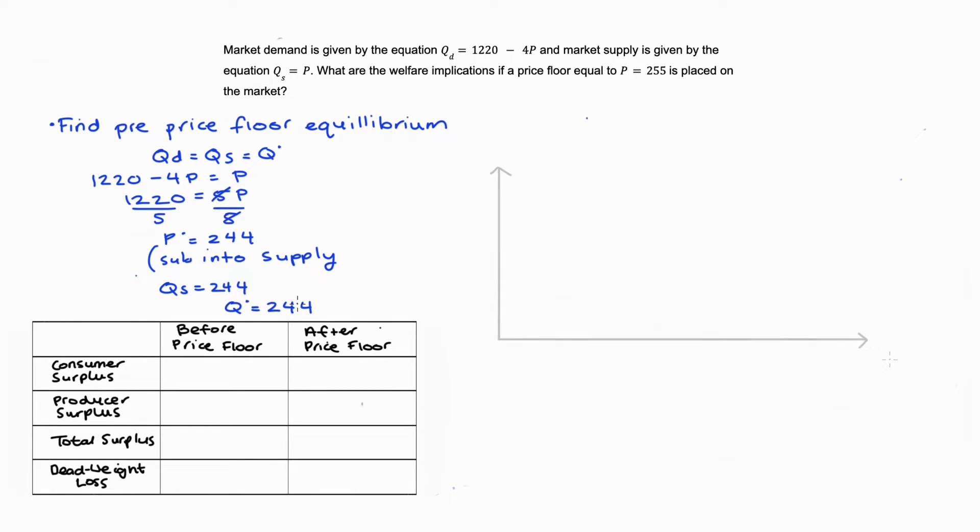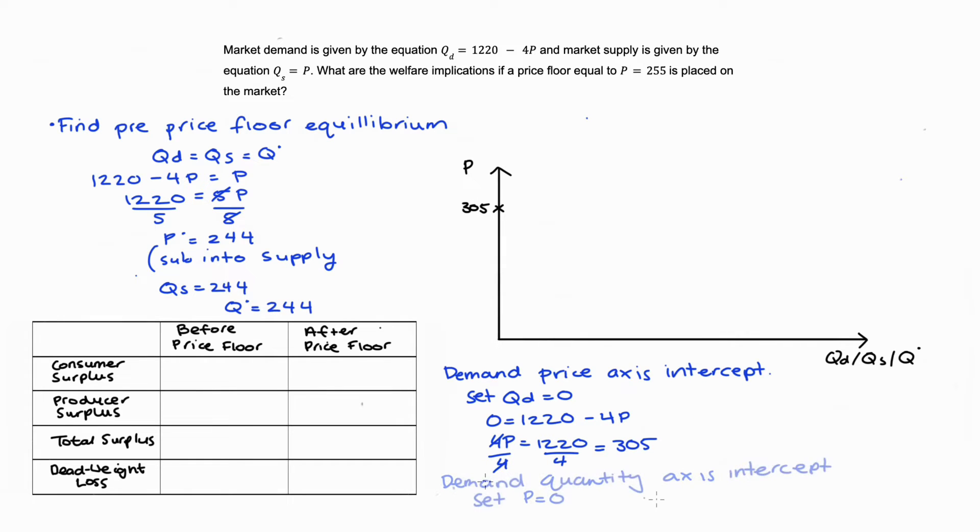Let's draw this out. I have two axes: on the horizontal axis we have quantity and on the vertical we have price. To draw our demand curve I'm going to find the two axes intercepts and join them together. Setting QD = 0, I get P = 305. When P = 0, QD = 1220. We can join together those points and we get our demand curve.